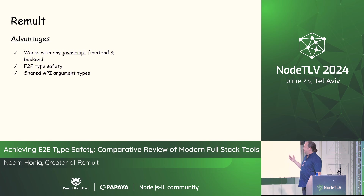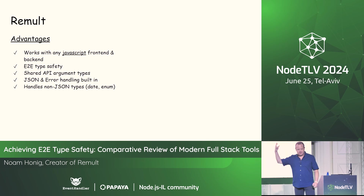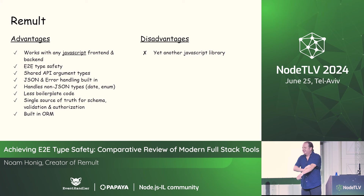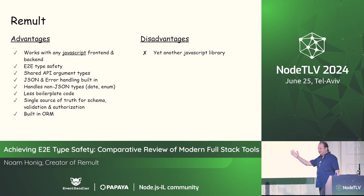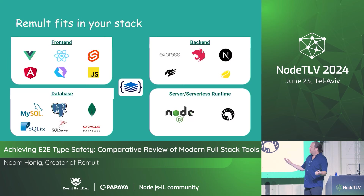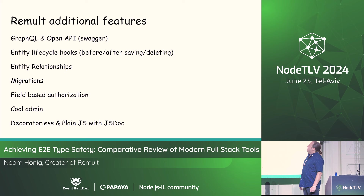Back to our slides. Advantages of Remult: it works with any front end or back end — React, Angular, Vue, whatever. It has end-to-end type safety, shares API argument types, handles all the JSON stuff, and handles even complex non-JSON types including classes, enums, and other ideas. A lot less boilerplate code and a single source of truth for schema, validation, and authorization. Disadvantage: yet another JavaScript library to learn and adopt. But since we're all JavaScript developers here for the ecosystem richness, I'll take that disadvantage. Remult fits within your existing stack — anything on the front end, anything on the back end, almost any database, Node, Deno, serverless, Vercel, Heroku, Azure, AWS.